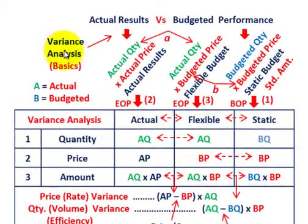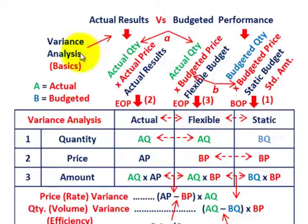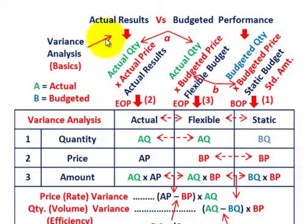What we're going to be going over here is variance analysis — just the basics on how we'd be setting up these different variances. When we're talking about variance analysis, you're dealing with inputs such as material, labor, and overhead, and as outputs you're going to have sales, revenues, contribution margins, and operating income, with variances between those inputs and outputs.